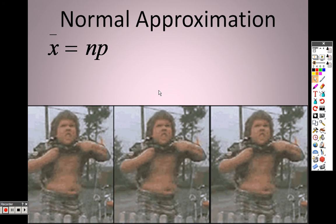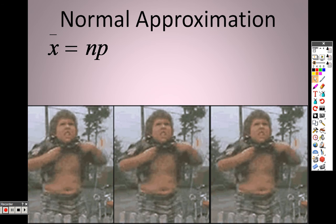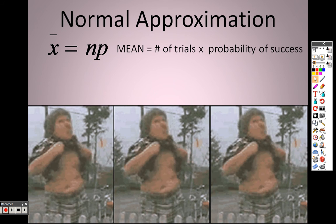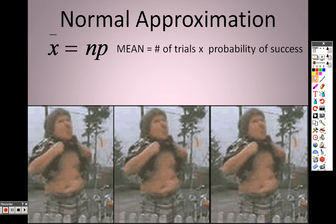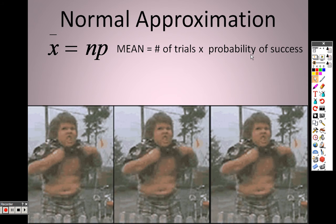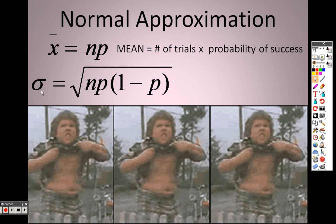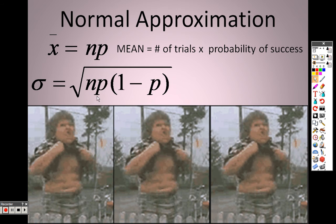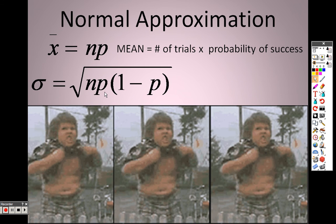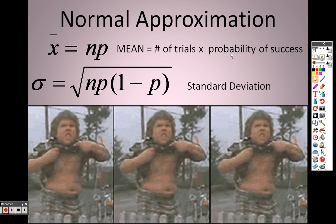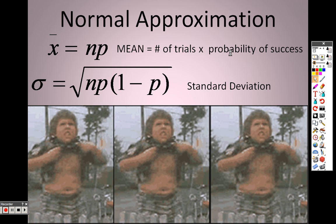So, normal approximation, this is how you actually find the mean. And you find the mean by doing N and P, and what that means is the number of trials times the probability of success. That gives you the mean. The number of trials that you did times the probability of success. To find the standard deviation, you use the number of trials times the probability of success, times 1 minus the probability of success, all square rooted. That'll give you the standard deviation.